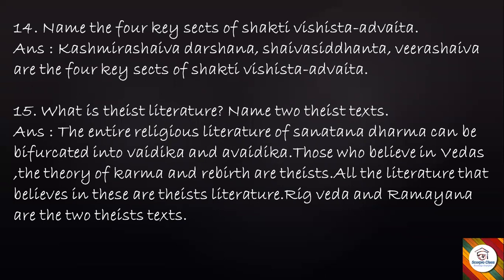Question: What is theist literature? Name two theist texts. Answer: The entire religious literature of Sanatana Dharma can be bifurcated into Vaidika and Avaidika. Those who believe in the Vedas, the theory of Karma, and rebirth are theists. All literature that believes in this is theist literature. Rig Veda and Ramayana are two theist texts.